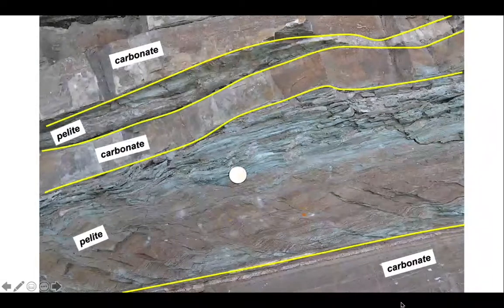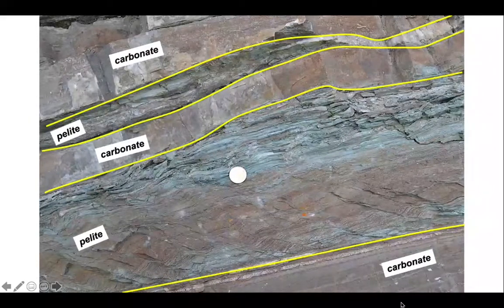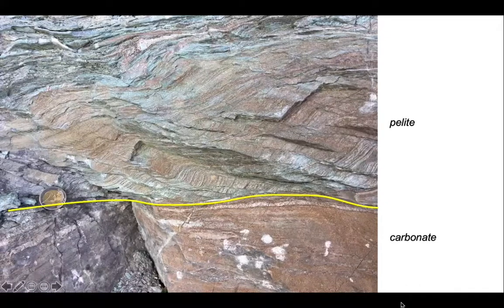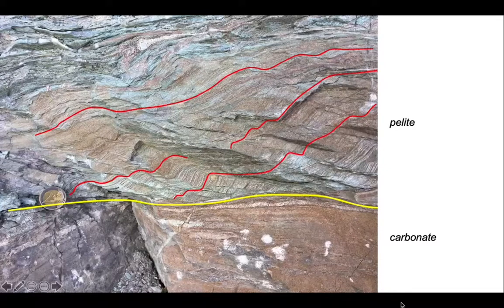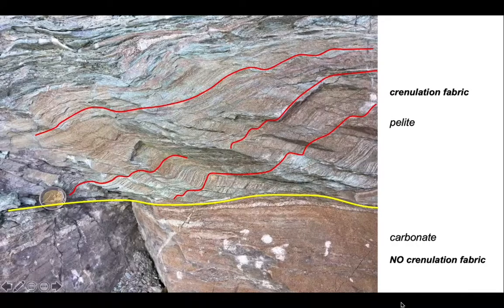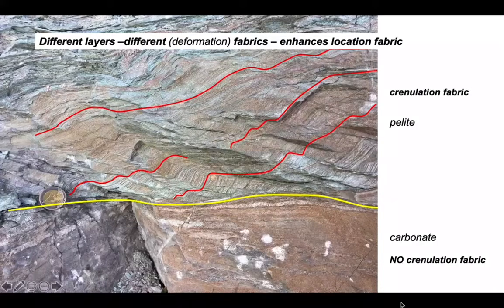Let's look at the lower contact again in a little more detail. There's a two-euro coin there for scale. Here's the boundary between pelite on top and carbonate below. Look at the pelite and you can see it has an irregularity picked out by these red streaks — a wavy or crenulated fabric. In the carbonate below there is no crenulation fabric. This is interesting because our two rock types here are deformed in different ways, so different layers have different deformation fabric, and the deformation is enhancing the location fabric, making it easier for us to recognise.